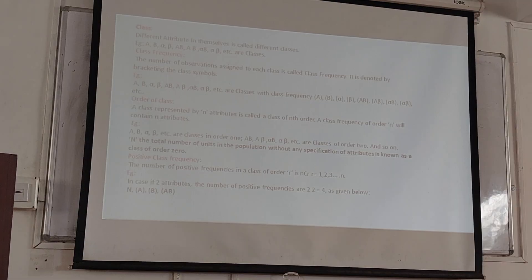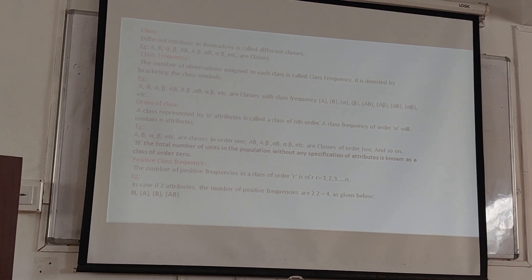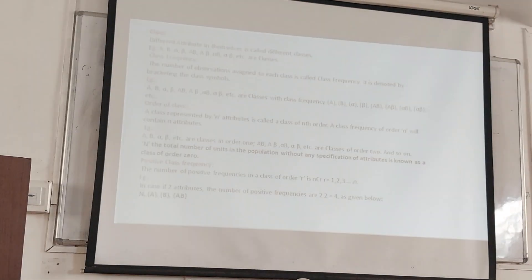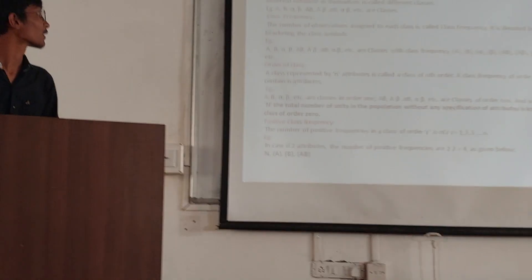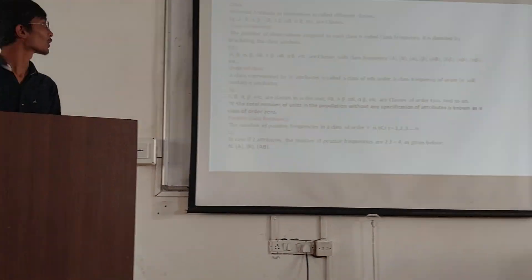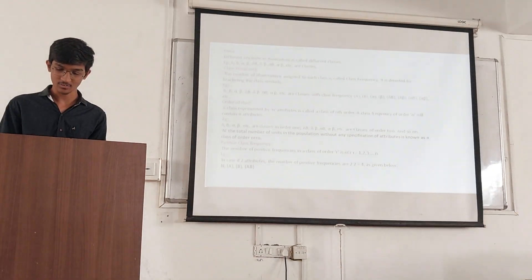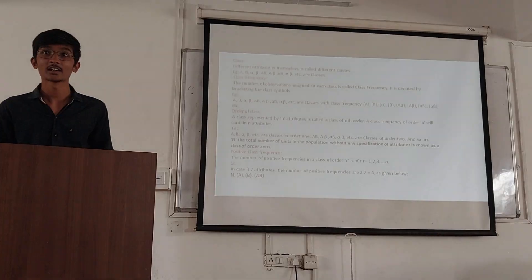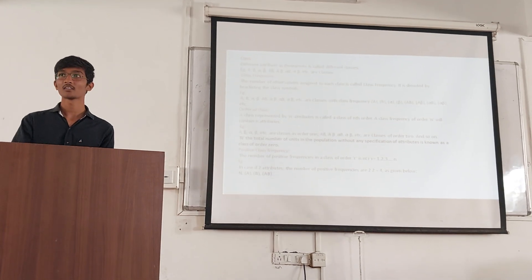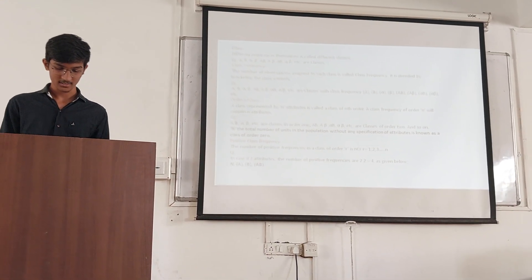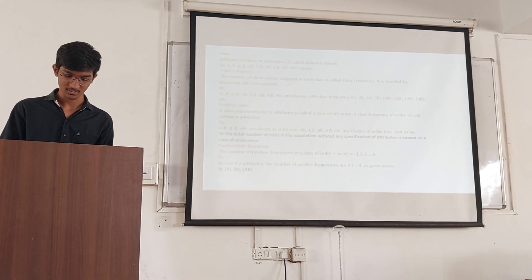Class: Different attributes themselves form different classes. Examples of classes are A, B, alpha, beta, AB, etc. The number of objects in classes is called class frequencies. Class frequencies are denoted by bracketing the symbols: (A), (B), (alpha), (beta), (AB), etc., are the classes with class frequencies.